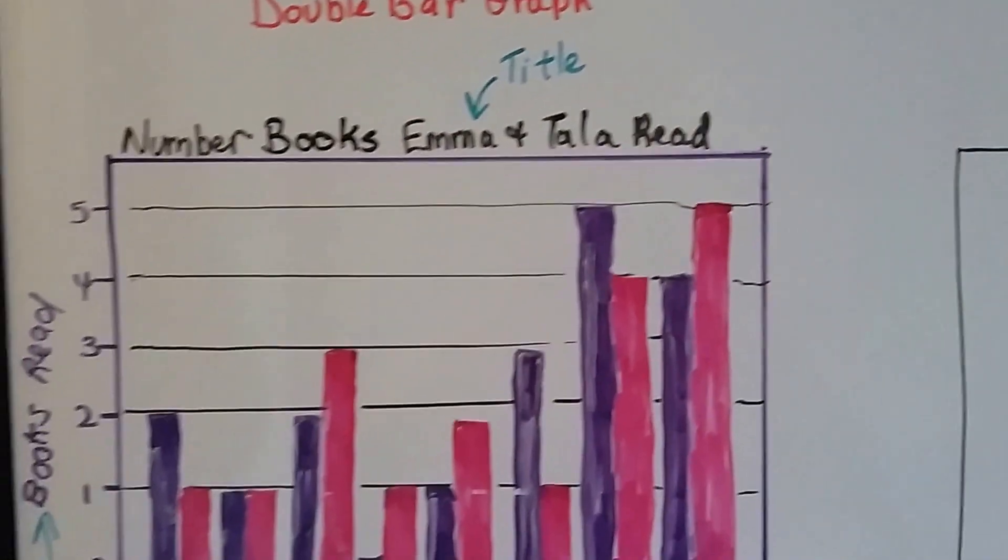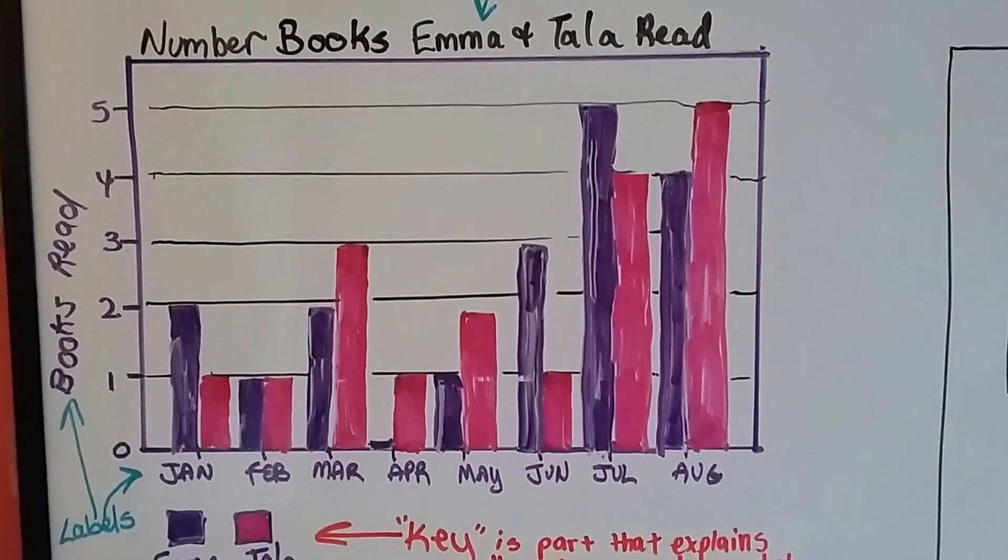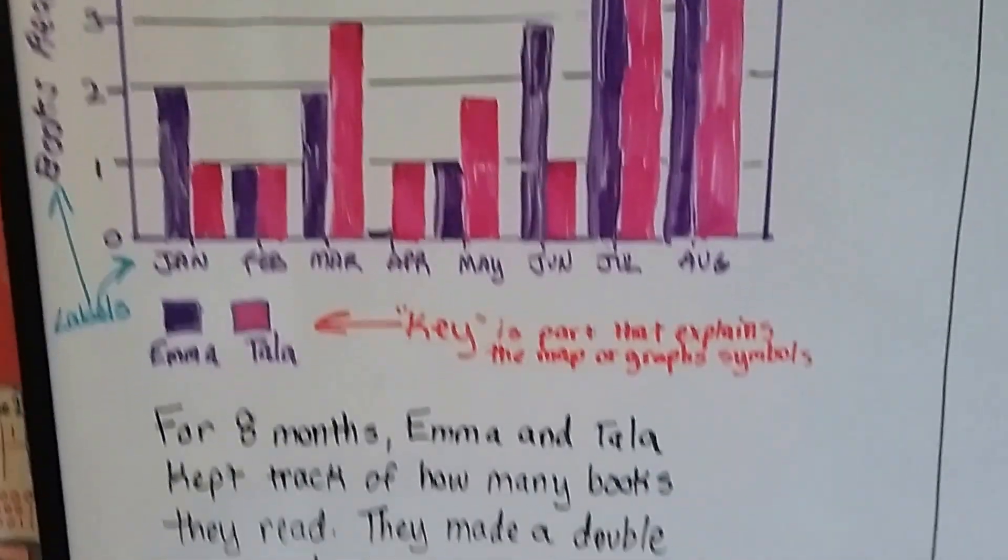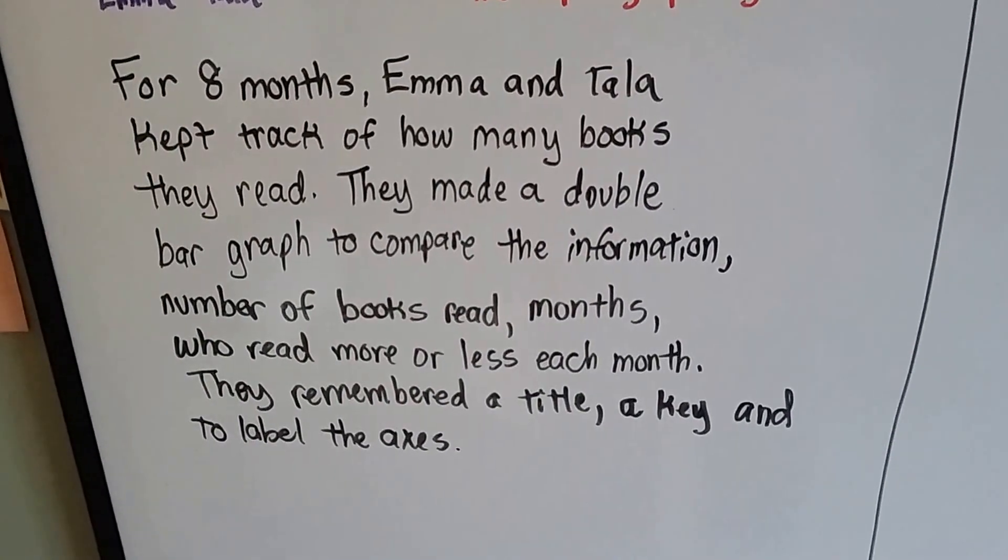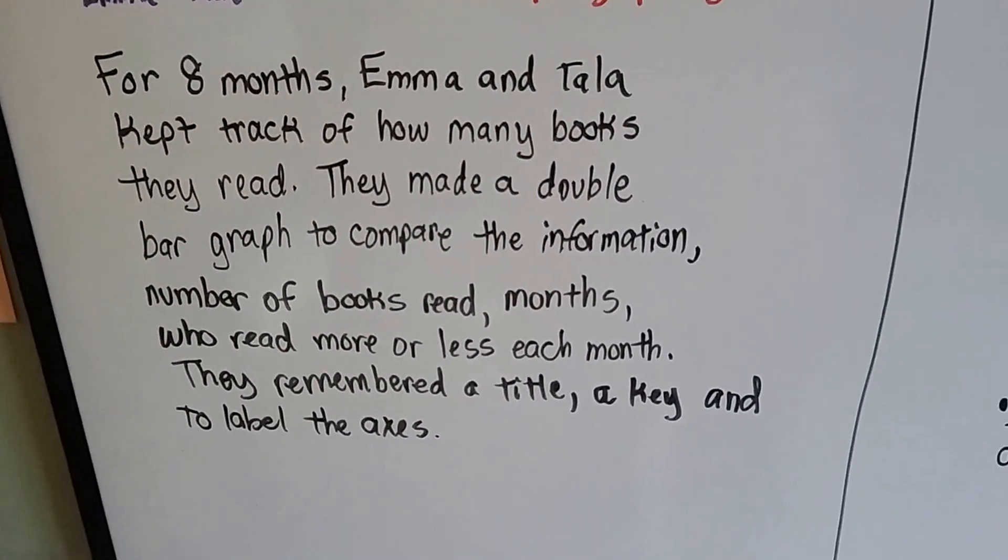Here's a double bar graph. It's the number of books that Emma and Tala have read over eight months. So for eight months, Emma and Tala kept track of how many books they read. They made a double bar graph to compare the information.